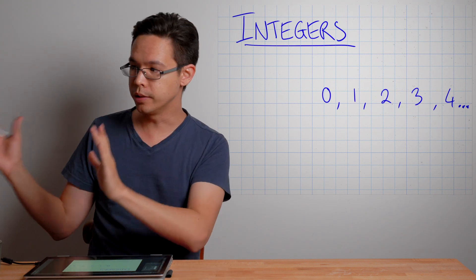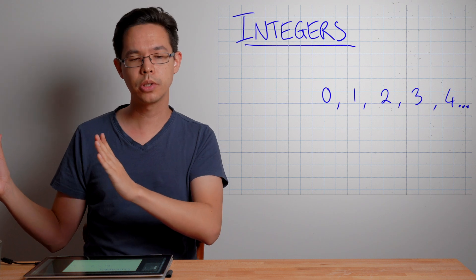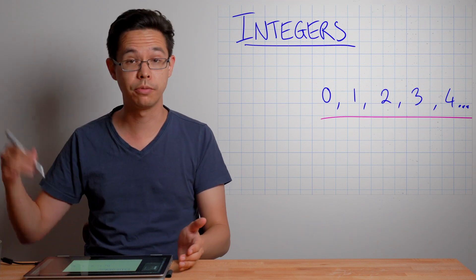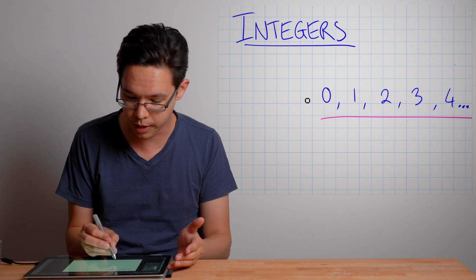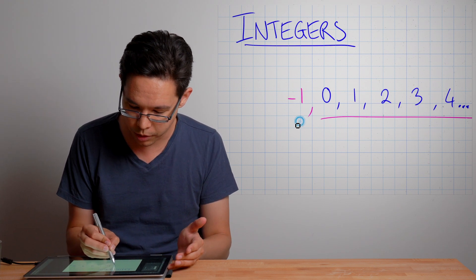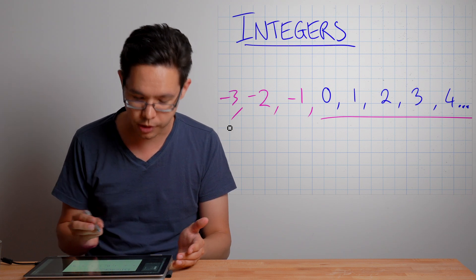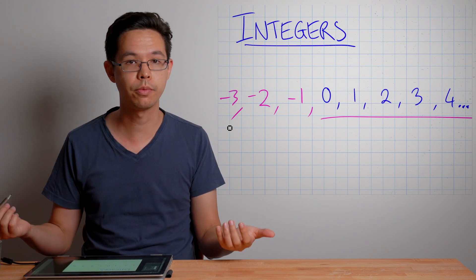Integers include that entire set, but also include the negatives. So here, I've got a list of zero, one, two, three, four, and to positive infinity. Integers just happen to include all the numbers below zero, which will be negatives: negative one, negative two, negative three. Simple.